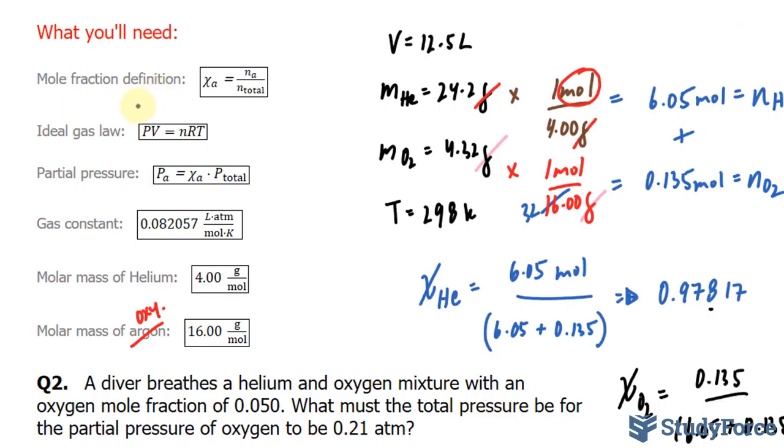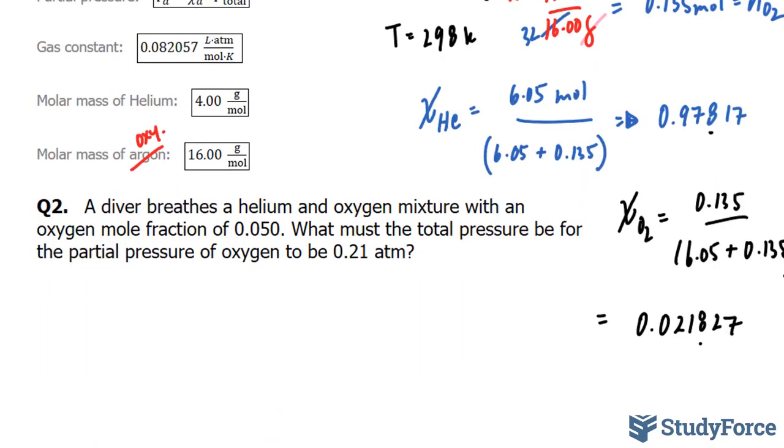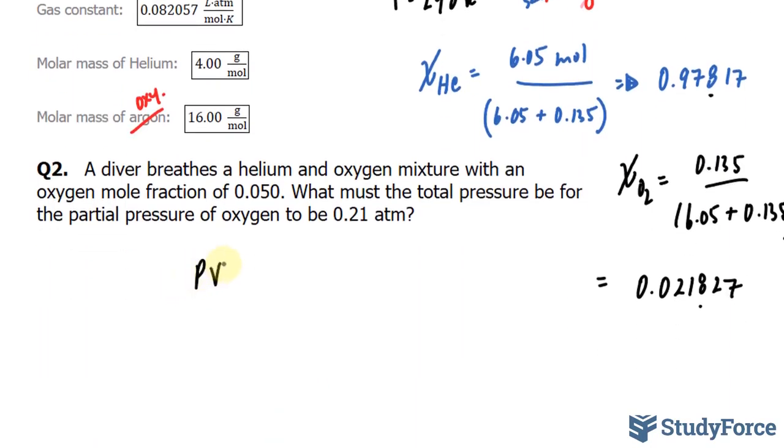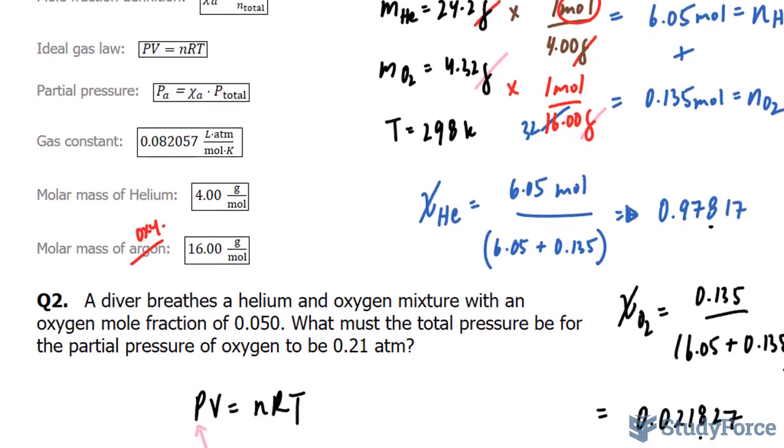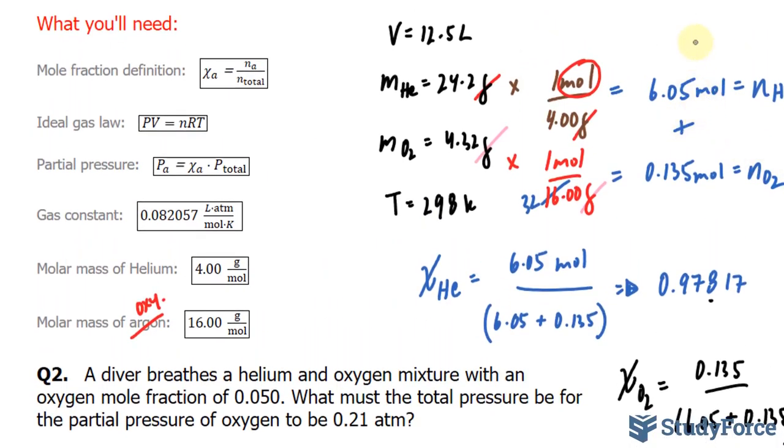I need to do this one more time, but for oxygen gas. So I'll have chi O₂ is equal to, using our calculator, 0.135 divided by 6.05 plus 0.135. And we end up with 0.0218. And just to be accurate, I'll keep a few more numbers, 2.7. Everything after this 8 is insignificant.